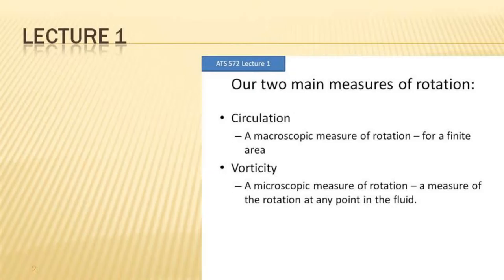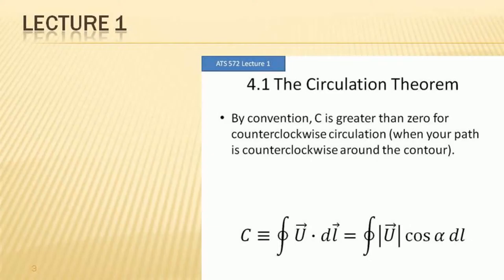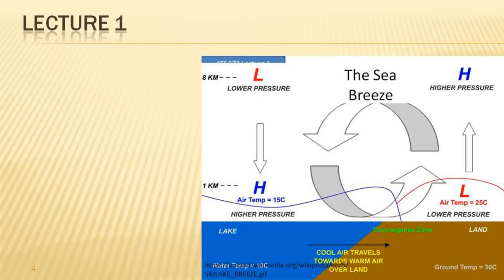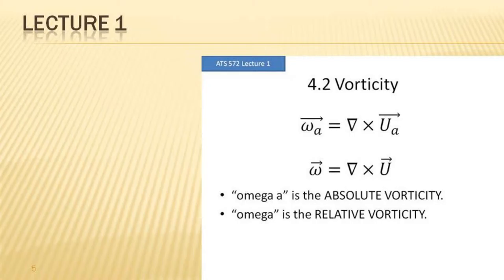Going back to lecture one, one of the things we need to talk about is the two main ways to describe rotation in the atmosphere. There is circulation, which is a macroscopic measure of rotation on a finite area, and there's vorticity, which is defined at a point — a microscopic measure of rotation. The circulation theorem itself is about changes in circulation. Circulation is that line integral as you go around a closed loop counterclockwise. We did examples that were horizontal, like circulation around a rectangle or a circle, but it also works vertically — like the sea breeze or the Hadley circulation.